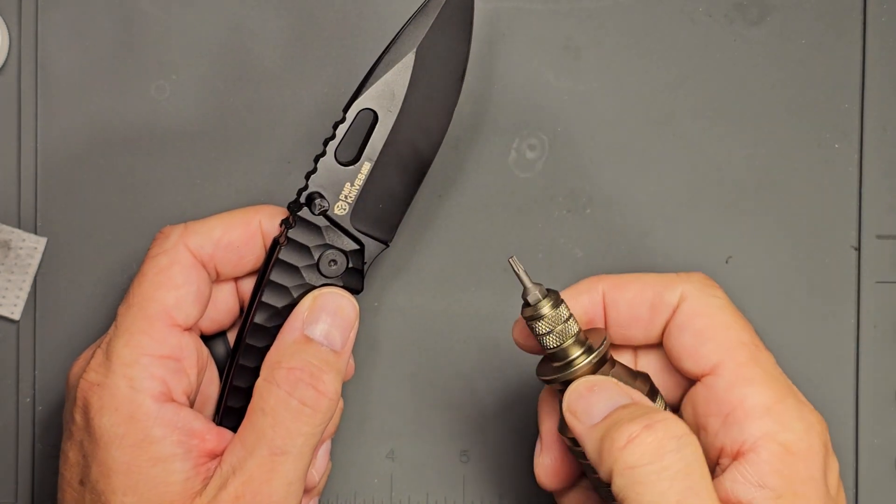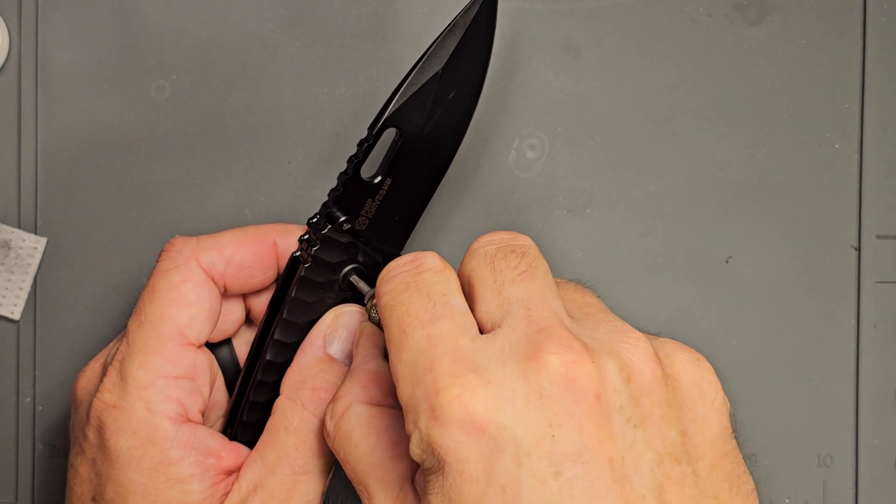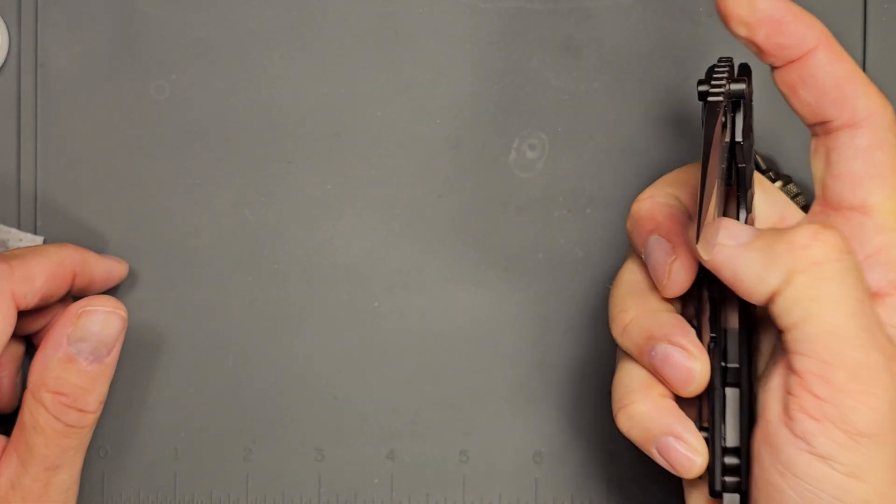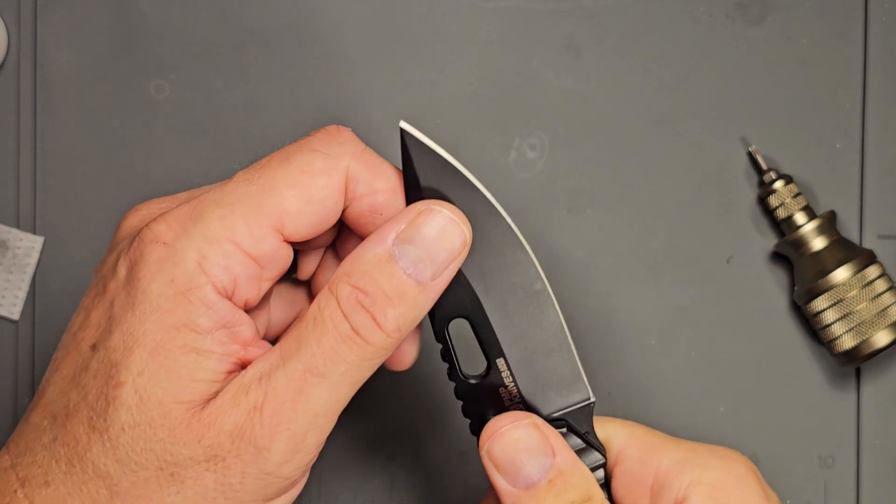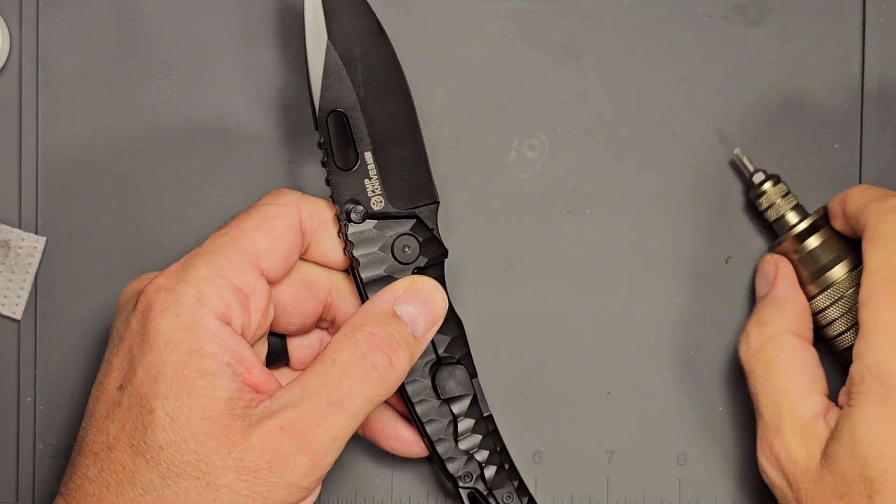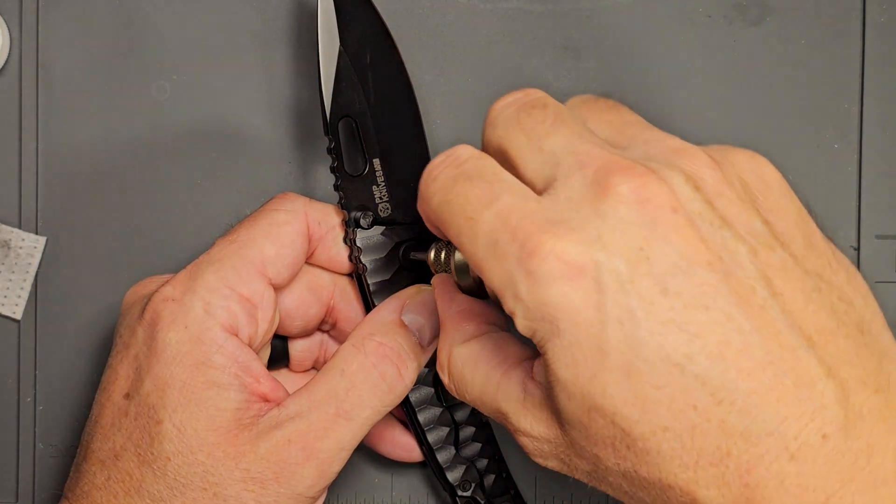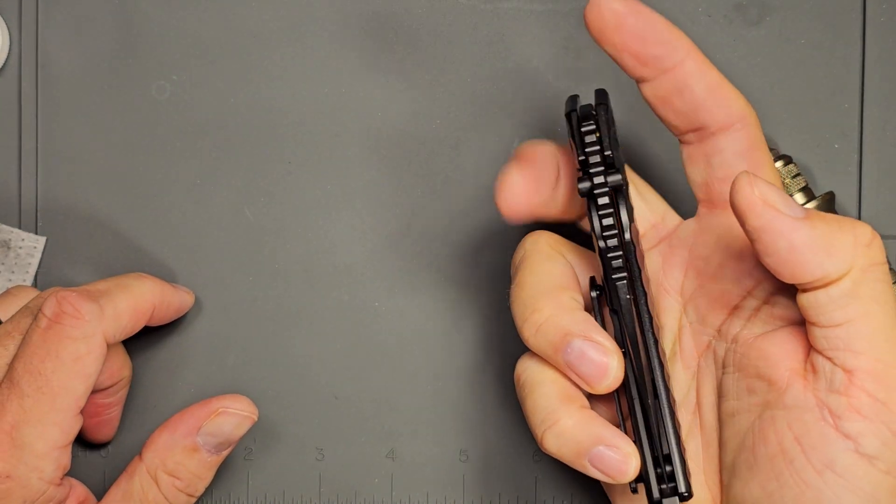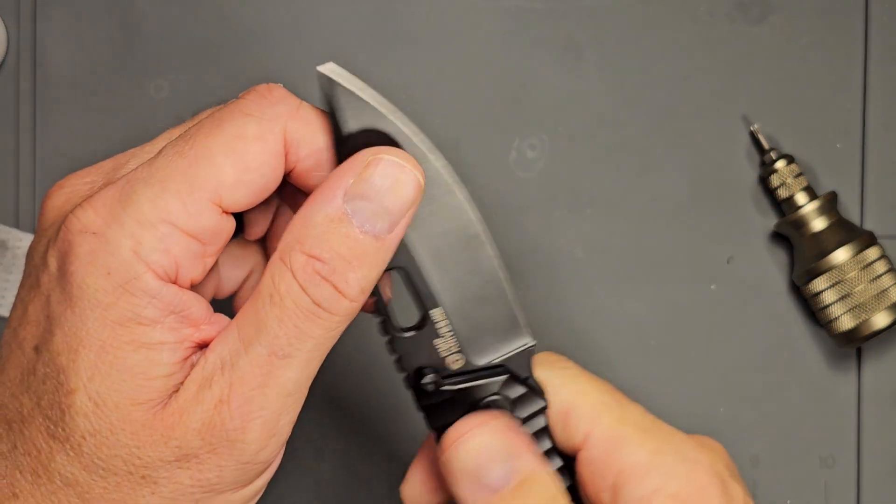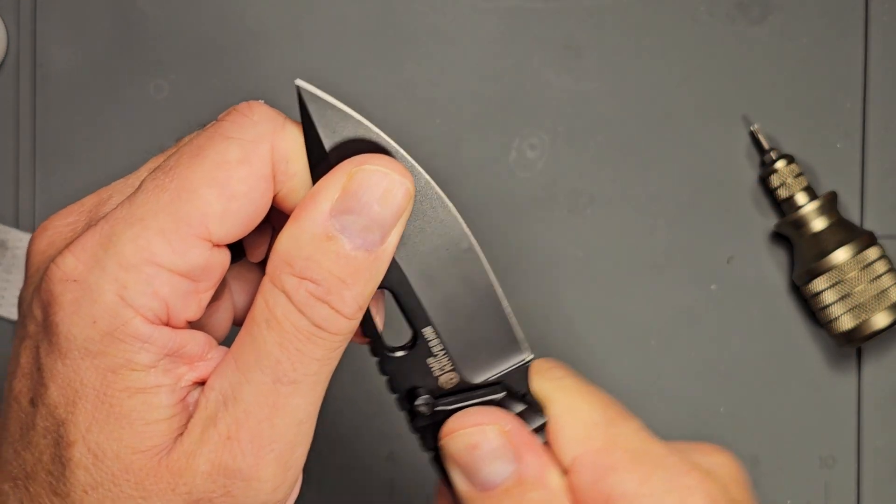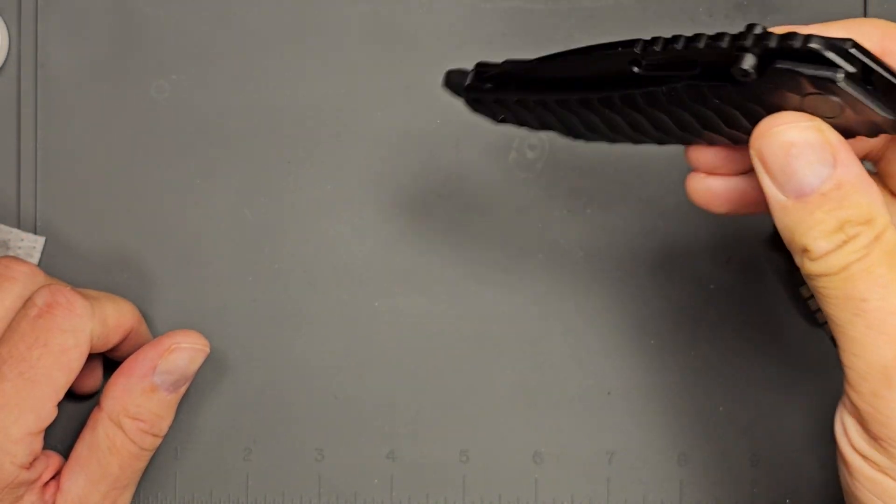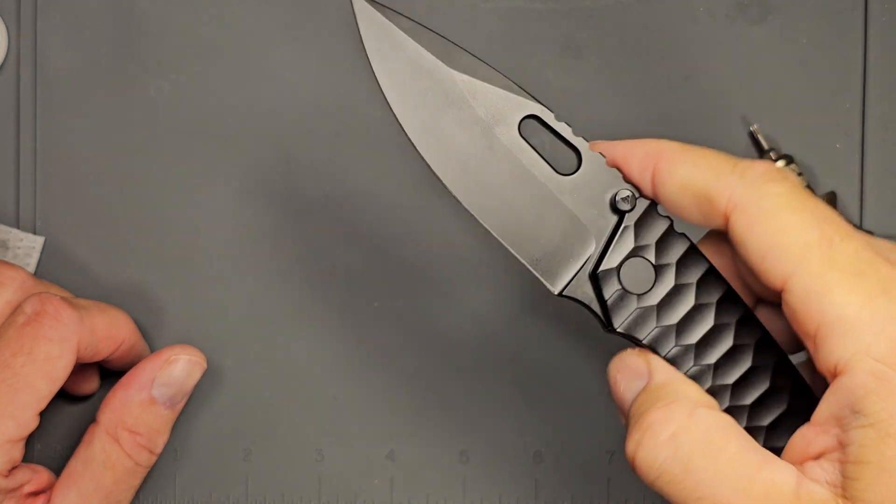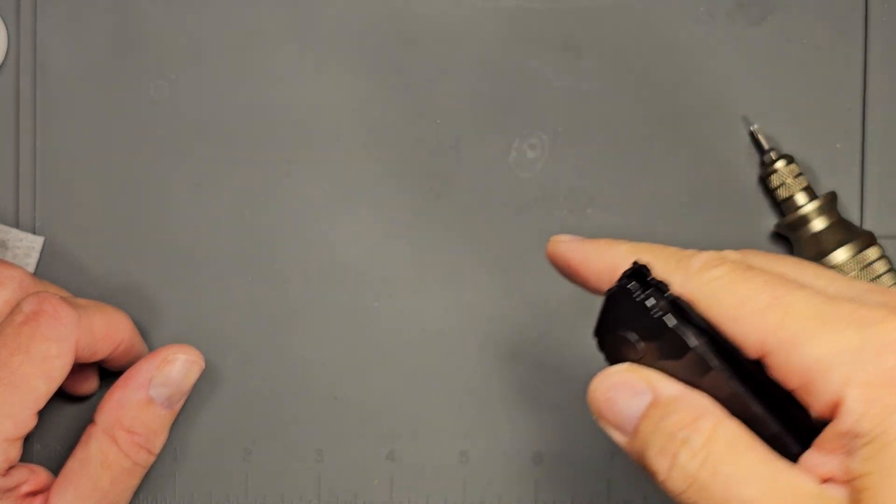Got a little bit of movement there, so let's tighten the pivot screw just a little bit. Still a little bit of movement there, so again tighten it just a tad. And I'm not feeling any movement up and down, side to side.